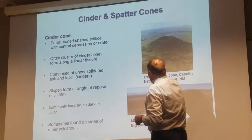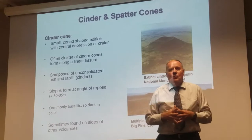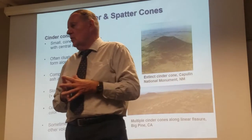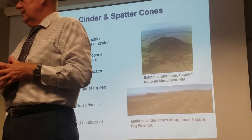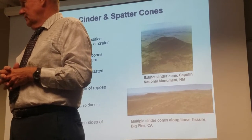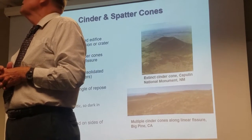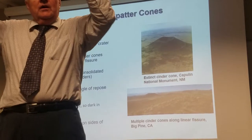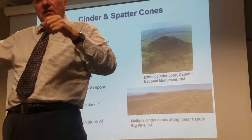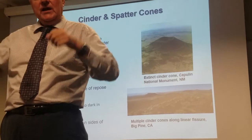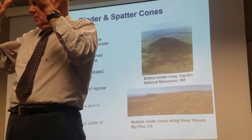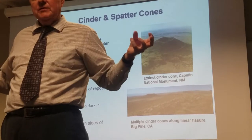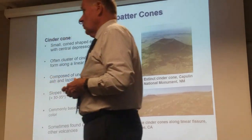Quite often, the slopes of a cinder cone will form at what's called the angle of repose. They're all loose material — it's like going down to the beach and building a little cone out of sand. You can only build it so steep, because if you build it beyond that, it's not going to support itself; it's going to collapse. And that's essentially what happens.